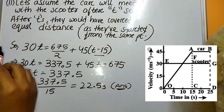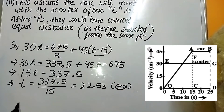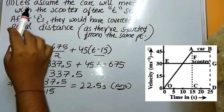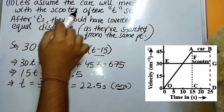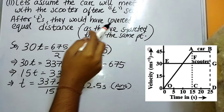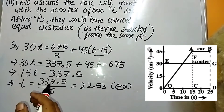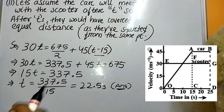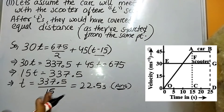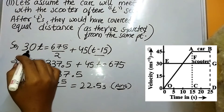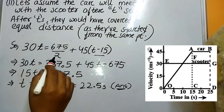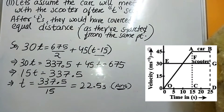Bit 2 asks us to find the time when the car and scooter will meet each other. From the diagram, we assume the car meets the scooter after t seconds. After t seconds, they would have covered equal distance, since they started from the same point. If two bodies start from the same point, when they meet it is obvious that they have covered the same displacement.